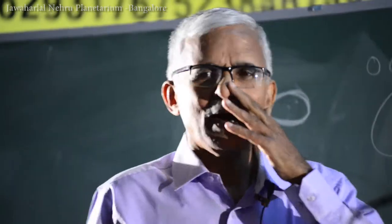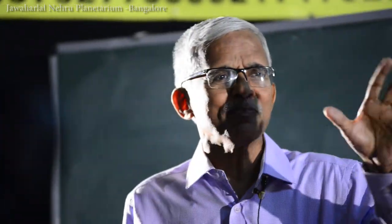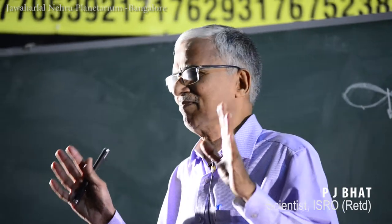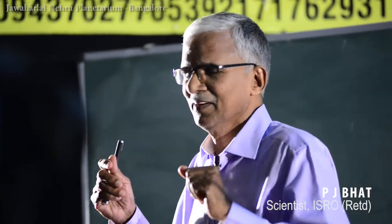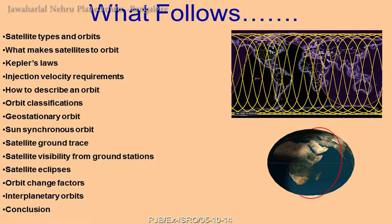I will cover some basic aspects of orbits: how a satellite is put into orbit, what makes the satellite go into orbit, and for different purposes we need different orbits. I'll also cover how we adjust orbits, because even once a satellite is placed in an orbit, the orbit changes over time. We have to correct the orbit to keep it in the same path so we can use it for the purpose for which we launched it.